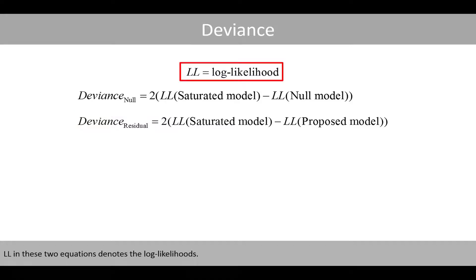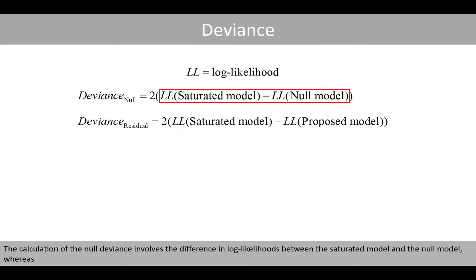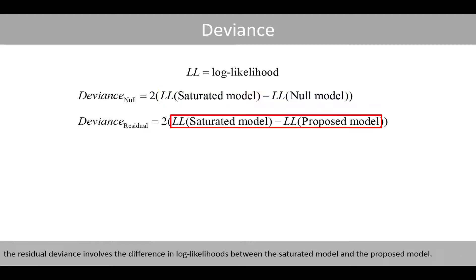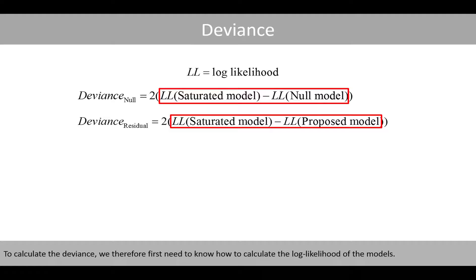The double L in these two equations denotes the log likelihoods. The calculation of the null deviance involves the difference in log likelihoods between the saturated model and the null model, whereas the residual deviance involves the difference in log likelihoods between the saturated model and the proposed model. To calculate the deviance, we therefore first need to know how to calculate the log likelihood of the models.